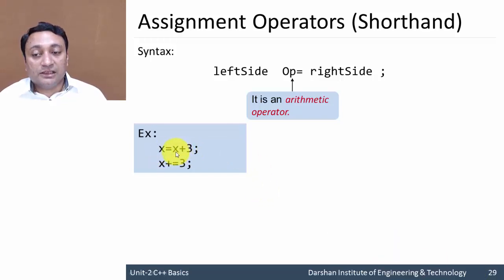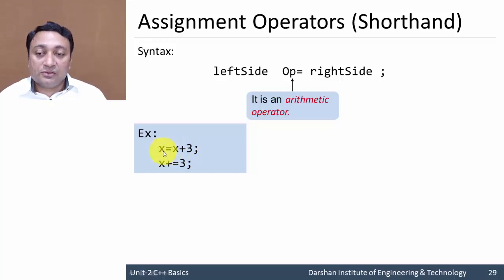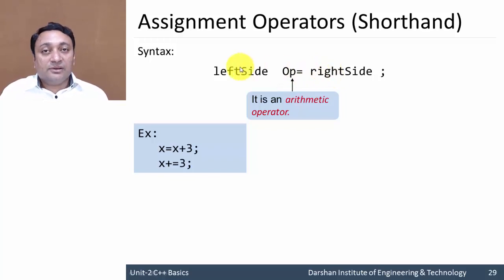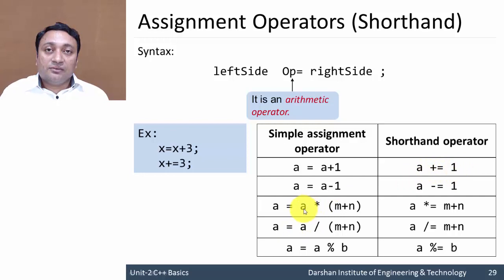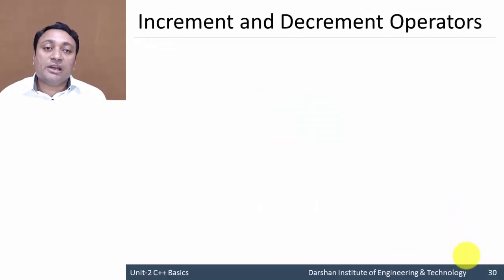We can use assignment operators as shortened operators. Suppose we want to perform x = x + 3 — to increase x by 3 and store it back in x. This can be written as x += 3. You write the operator, then the equal sign, and your right-hand side value. For example, a += 1, or a *= (expression). This is how the shortened compound assignment operator works.